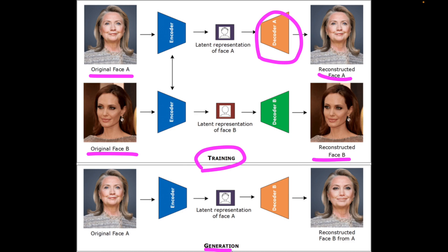In the generation phase, the source encoder runs on the source person's face and the target decoder is used to get the target person's face on the source person's image, retaining all the facial expressions.